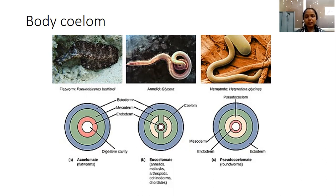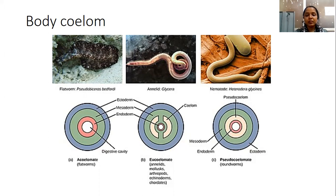Next are the eucoelomate animals. The animals which possess a true coelom come under eucoelomates. The coelom is the lining between the gut and the body wall — here we can see the space or coelom between the gut and the body wall. Examples of eucoelomates are molluscans, onychophorans, annelids, arthropods, chordates, echinoderms, bryozoans, and hemichordates.